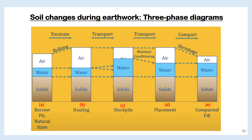Notice that the only thing that doesn't change during the earthwork process is the volume of the solids. The water content will increase and decrease during the process. The total volume will definitely increase from its natural state during excavation, and will definitely decrease from its state in the stockpile to its final compacted volume. Generally, the total volume of the compacted fill will be less than its total volume in its natural state. However, if the natural soil is very dense, the compacted fill might have about the same volume or even more than the original volume.